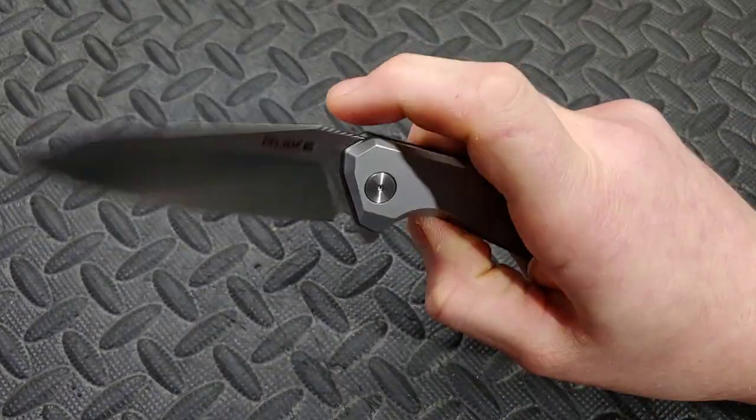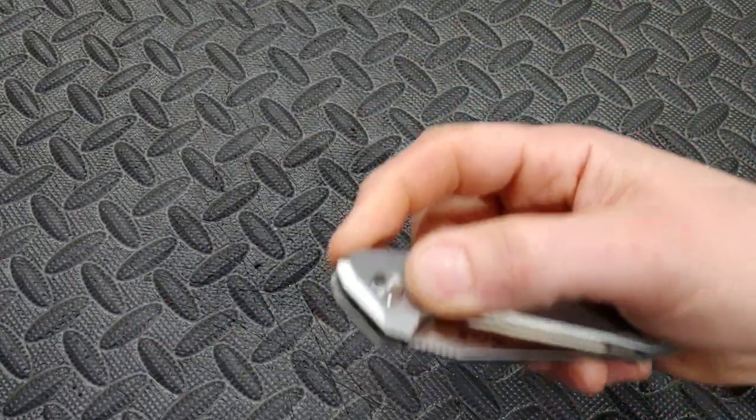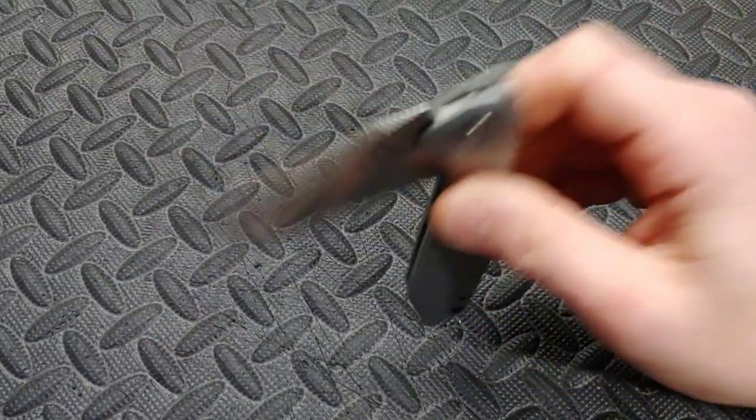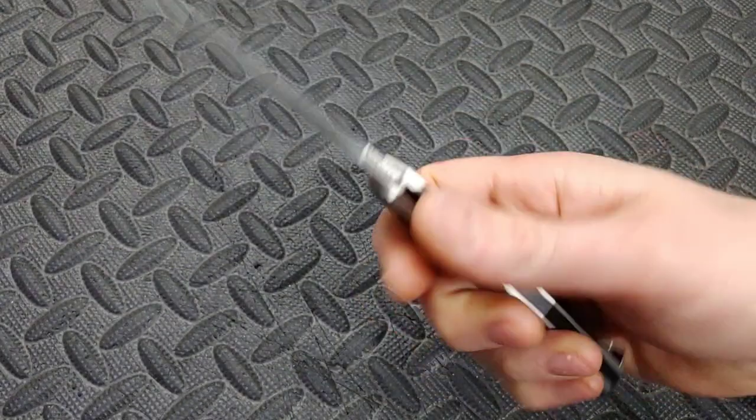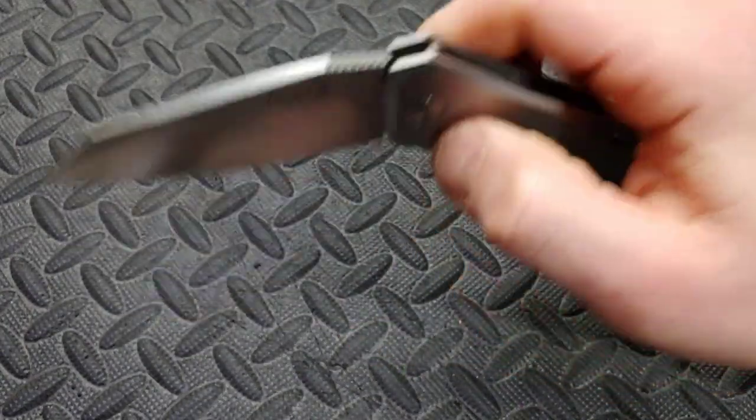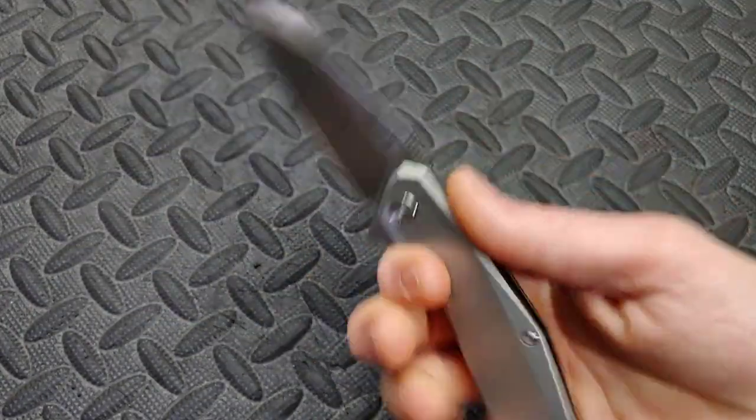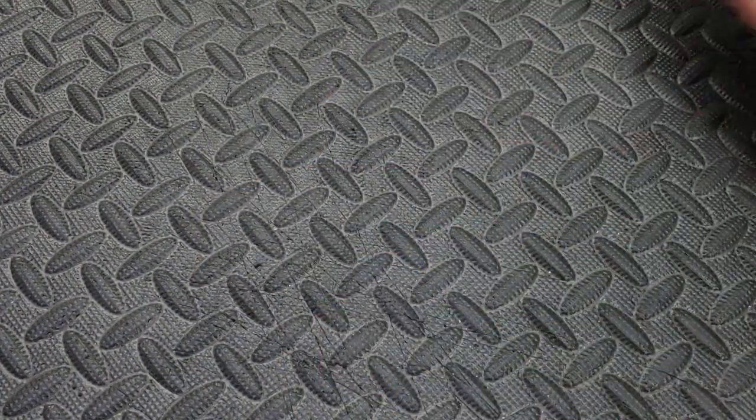Great ergos and great blade shape for EDC. Flipping action. These things are about I don't know 30 bucks maybe 40. Yeah I think they're 40 bucks right around there, 40 bucks or less. Great knife. Like I said 14c28 blade steel.